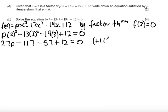So I'm now going to add 117 to both sides, I'm also going to add the 57 to both sides, and I'm going to subtract 12. So when I add 117 and 57, what I get is 174. When I subtract the 12, that brings it down to 162.